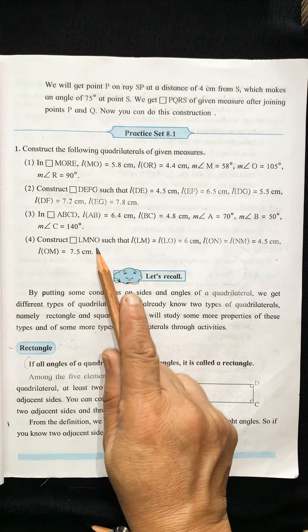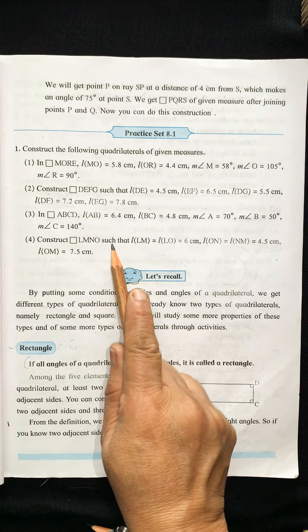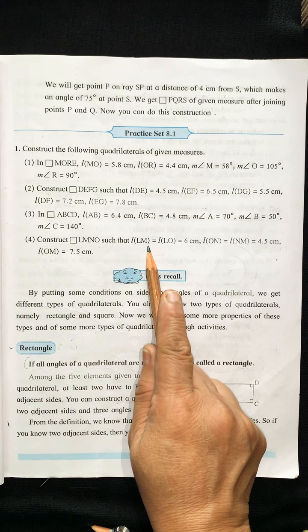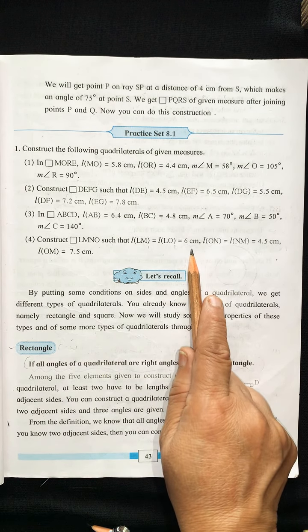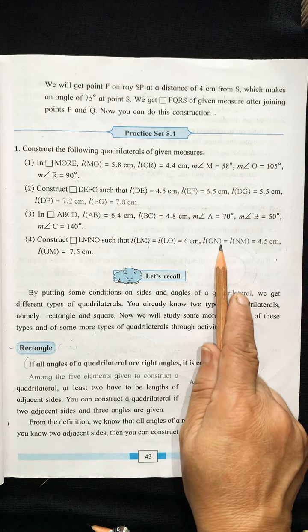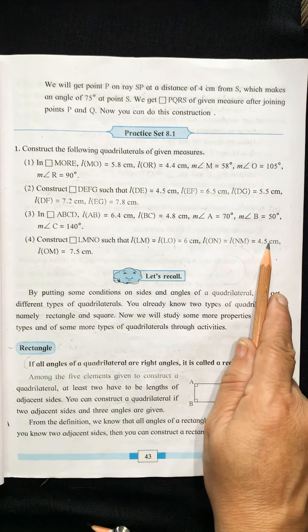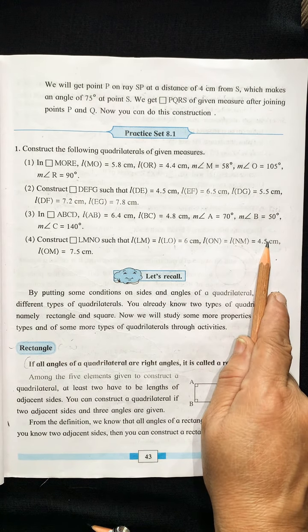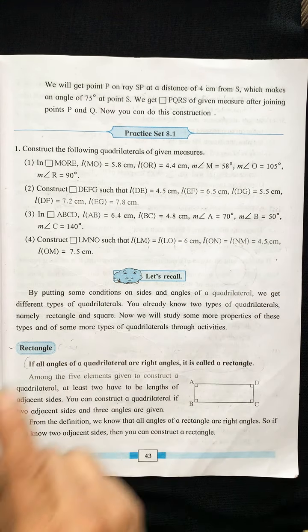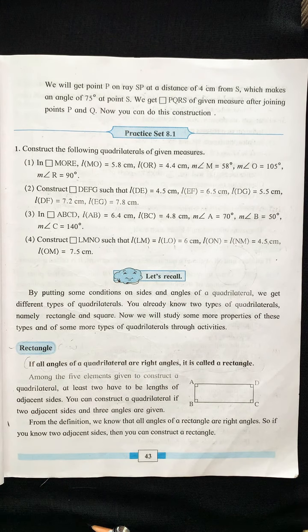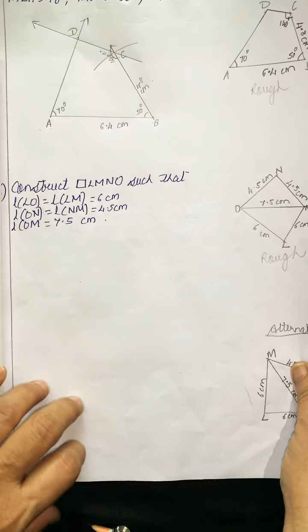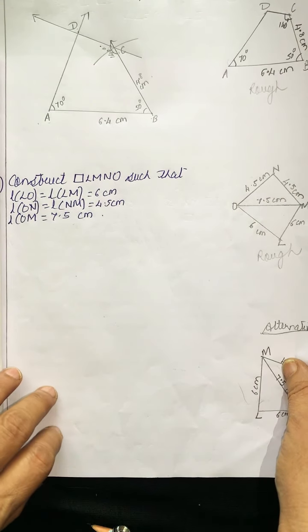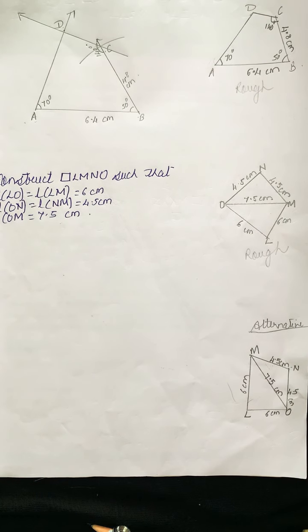Now let us go to the fourth question. Construct quadrilateral LMNO such that LM = LO = 6 cm, ON = NM = 4.5 cm, and diagonal OM = 7.5 cm. This quadrilateral can be drawn in two different ways.